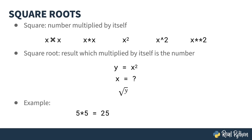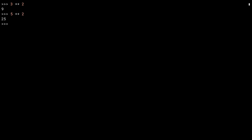Here's an example: 5 times 5 is 25, so the square root of 25 is 5. Let me start by using the power operator to square the number 3 — 3 times 3 is 9. Let me do it once more with 5 — 5 squared is 25. Now, to get the square root, I need to get the function that does this from the math library. The square root of 25 is 5.